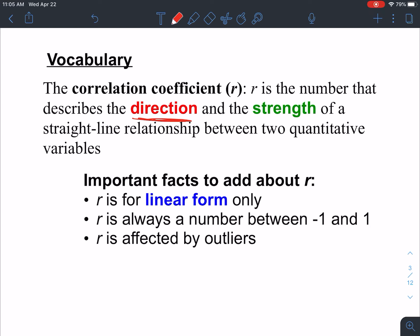Some important factors here about R. These are some key things to write down. Only for linear form, meaning a line. It's always a number between negative 1 and 1. There's a great chart coming up in the next couple slides that you might want to use. And then R is affected by outliers. Our R value is going to change depending on if we have an outlier or not.